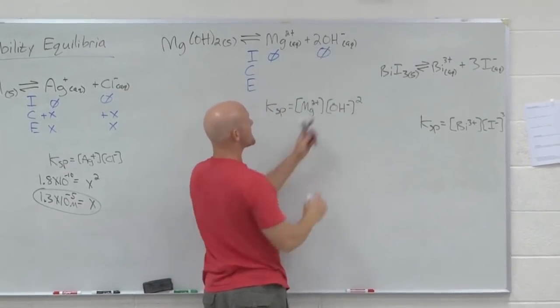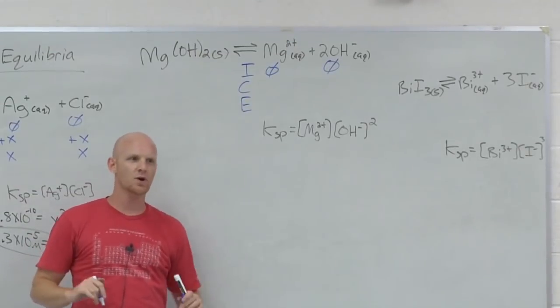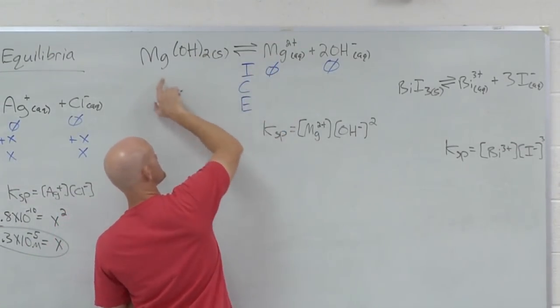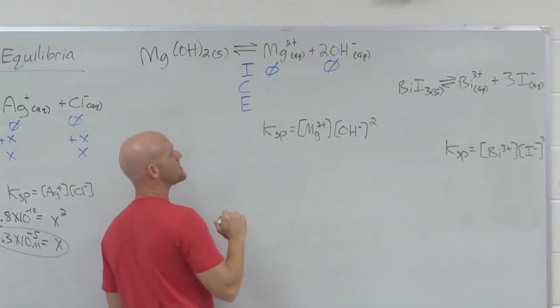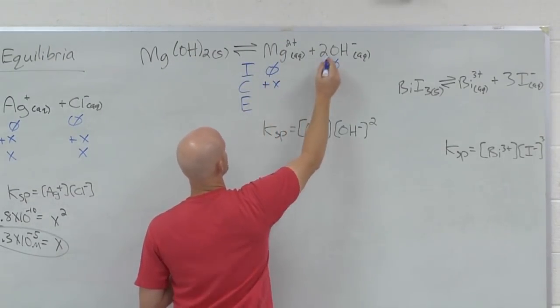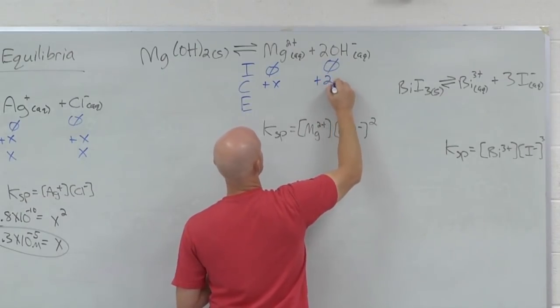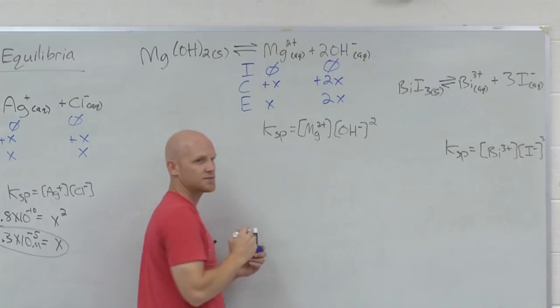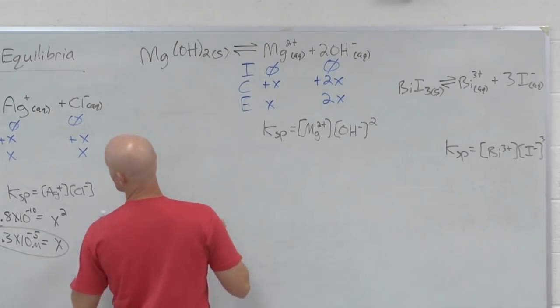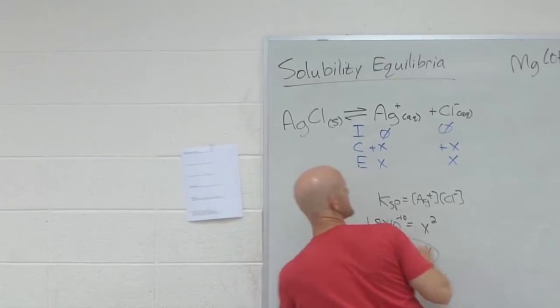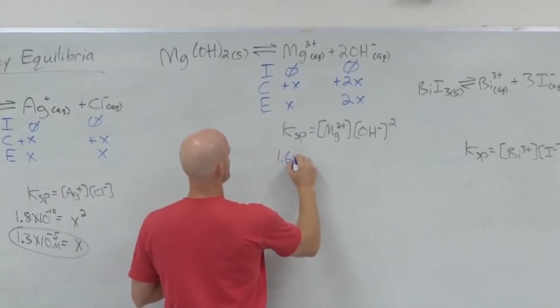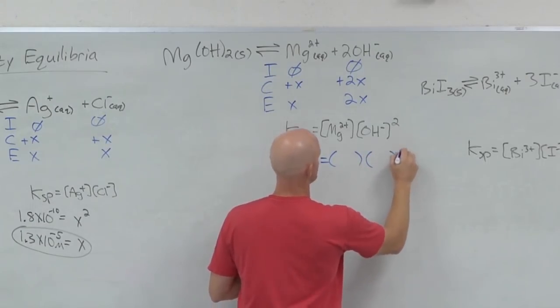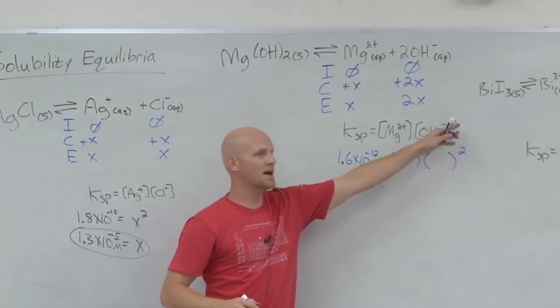Again, pure water technically does have a little bit of hydroxide, but it's usually low enough that we don't care. So, what is the change in the magnesium ion concentration when an X molar concentration of Mg(OH)2 dissolves? Plus X. And hydroxide? Plus 2X. And so at equilibrium, X and 2X. And that's what gets plugged into our expression.